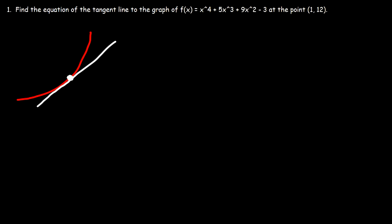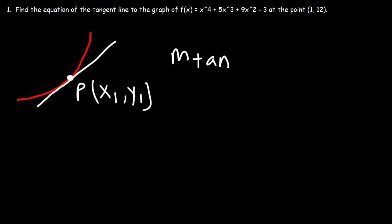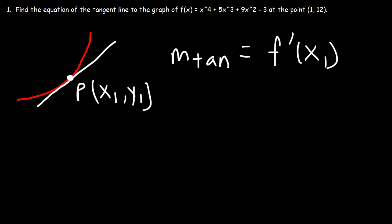In order to find the equation of the tangent line, there are two things that we need. First, we need the point at which the tangent line touches the curve — the x and the y coordinate of that point. Second, we need the slope of the tangent line. We can find it by taking the first derivative of the function and evaluating it at the x coordinate of that point.